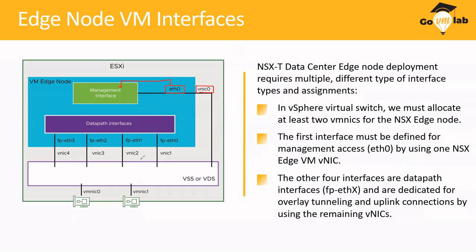Whenever you deploy Edge Node, during deployment it will ask you to provide the IP of your Edge Node, the domain name, and the default subnet gateway information. Those IP configurations are then assigned to the ETH0 interface of your Edge Node.